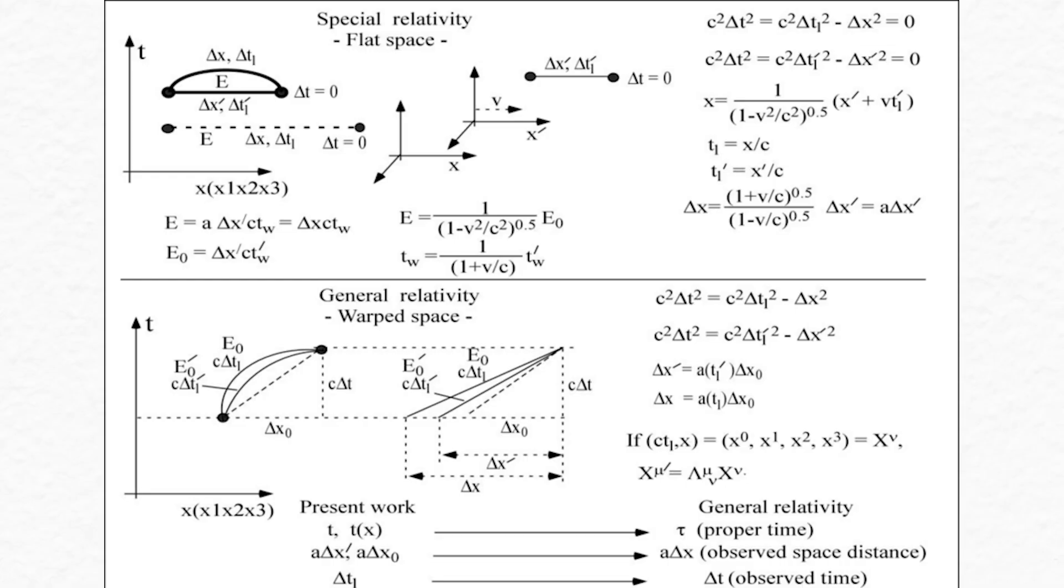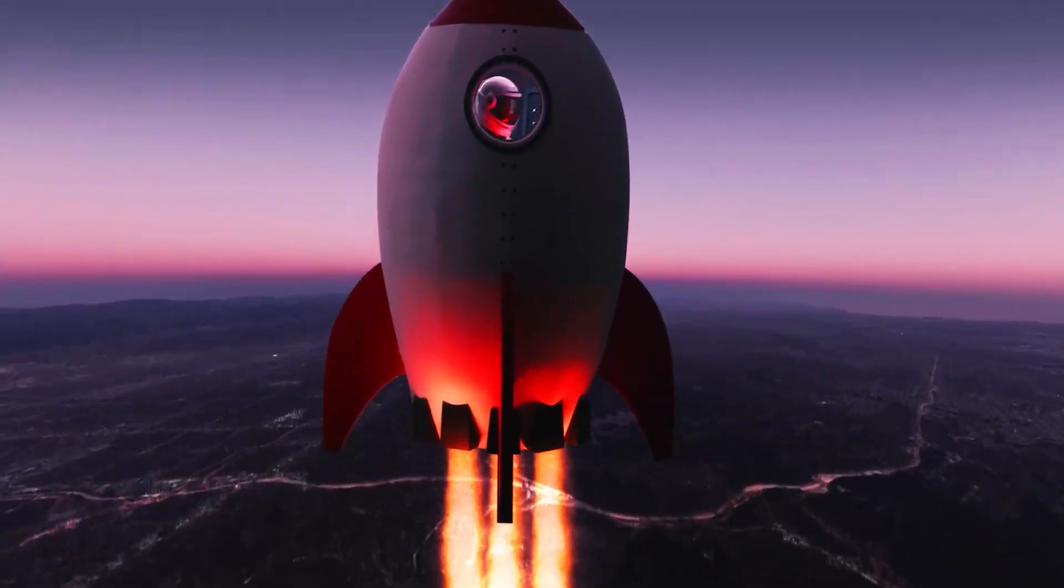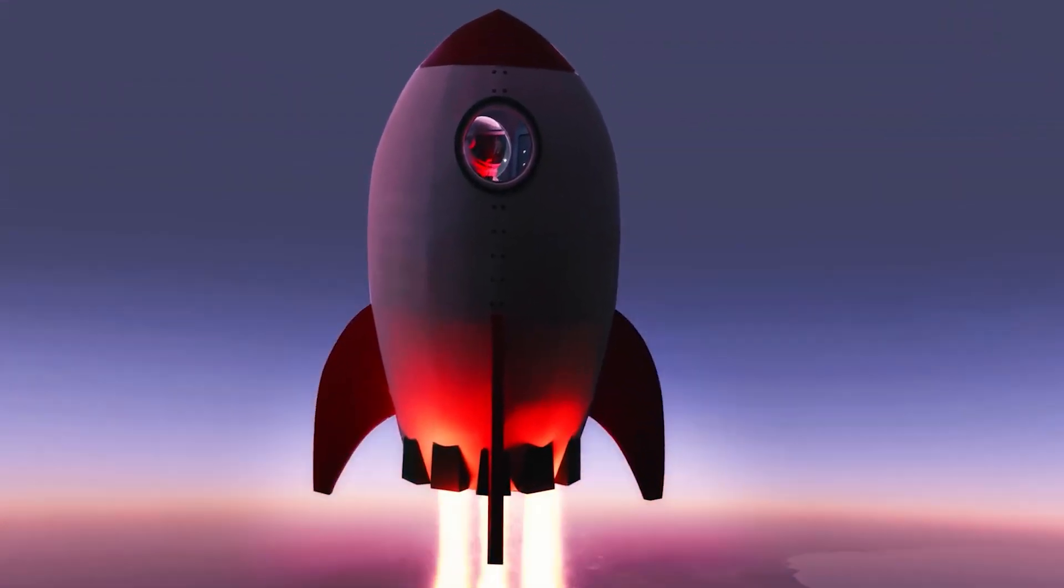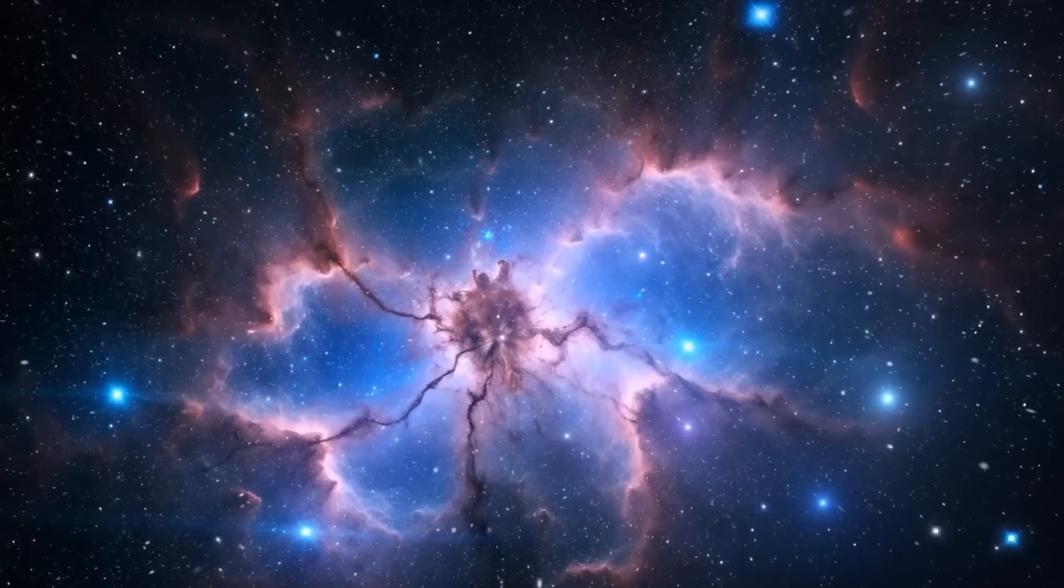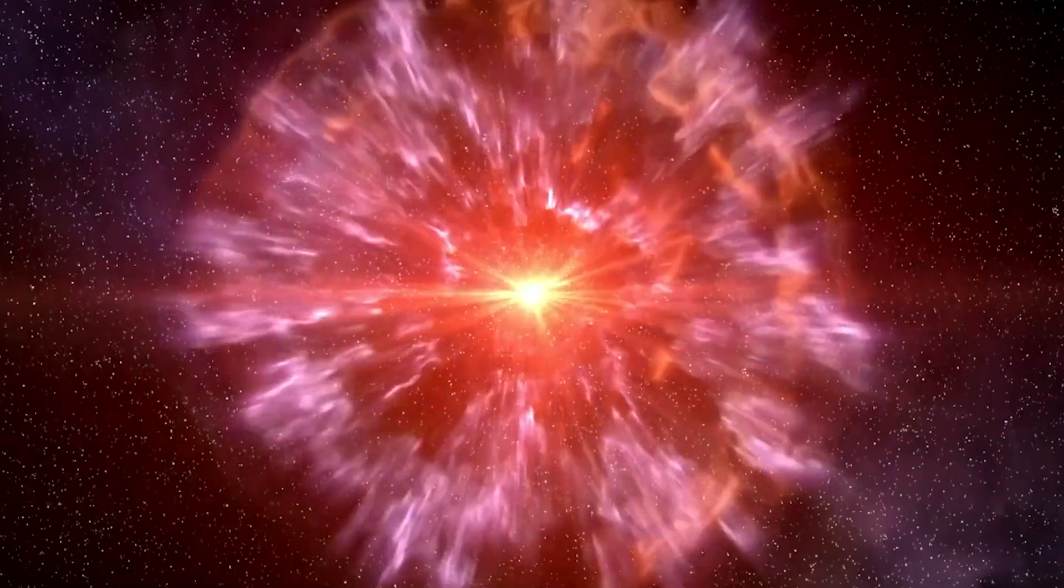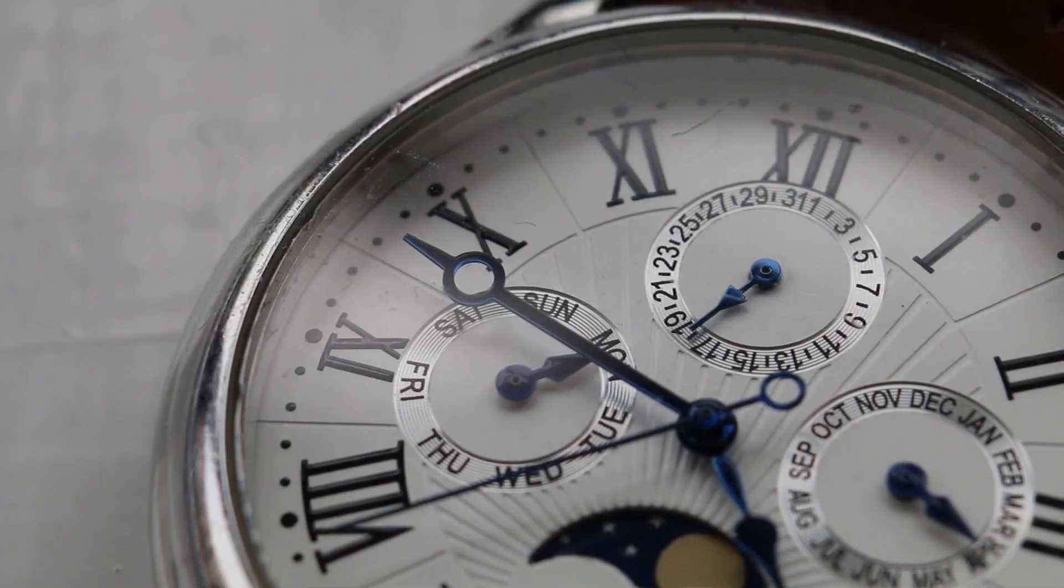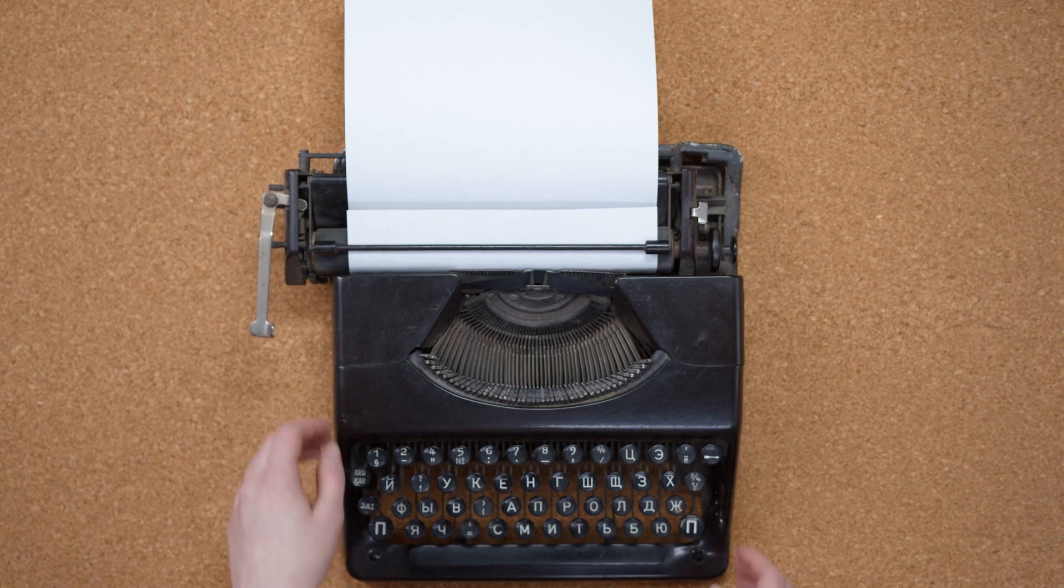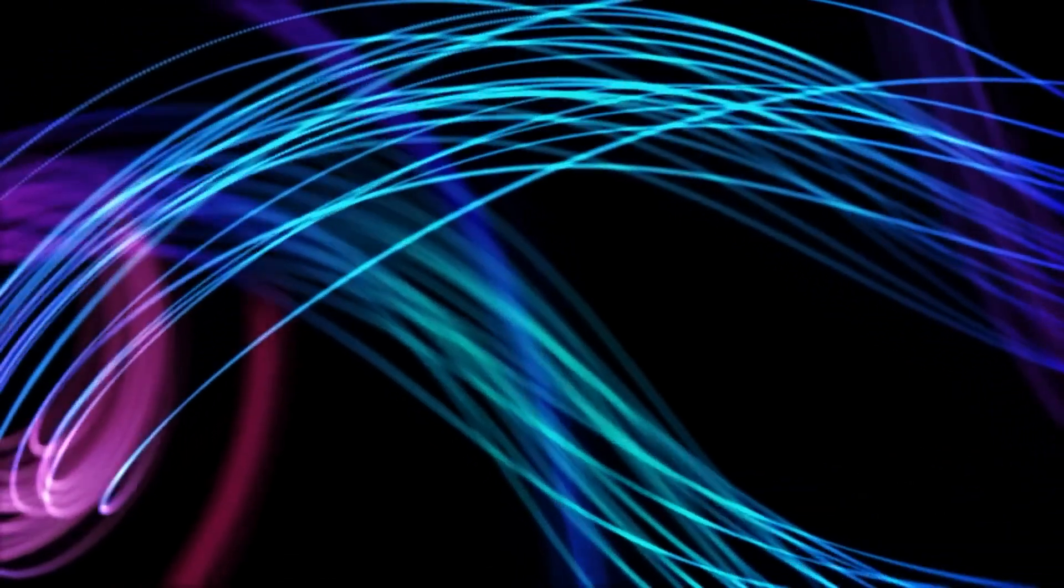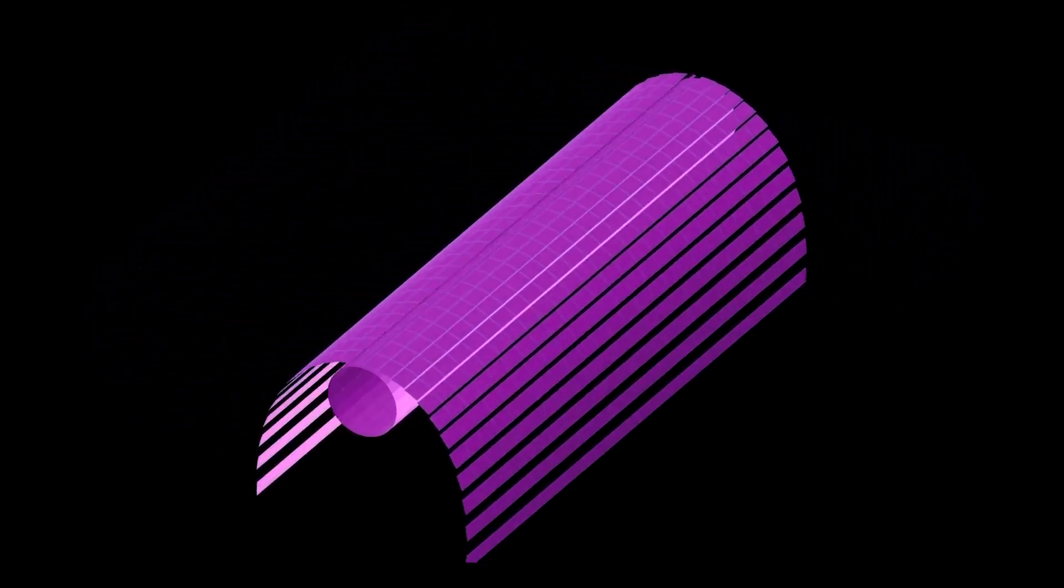Both General Relativity and Special Relativity are built on the principle of observer independence. This means that the rules governing the universe shouldn't change based on how fast someone is moving. The key difference between the two is how they describe space-time. In Special Relativity, space-time is portrayed as flat, much like a sheet of paper. However, General Relativity takes a more dynamic approach, allowing space-time to curve, similar to a rubber sheet being stretched and bent.